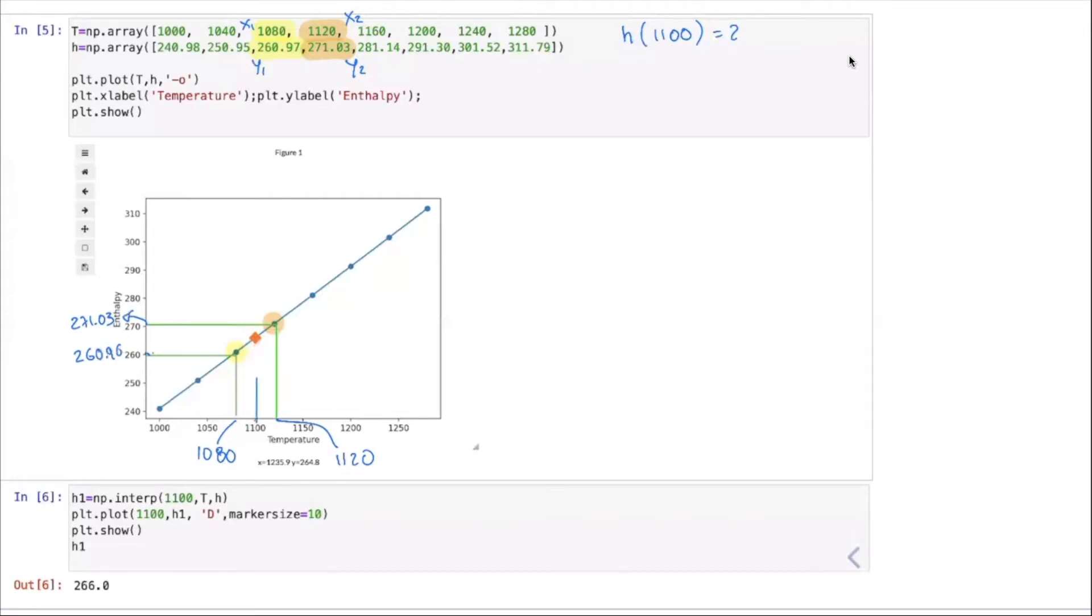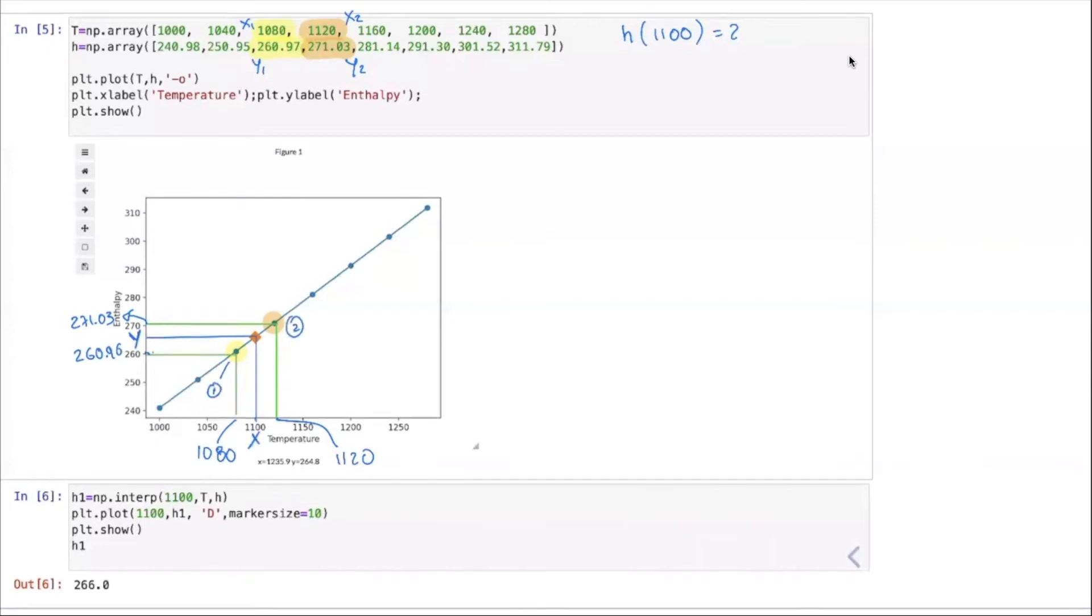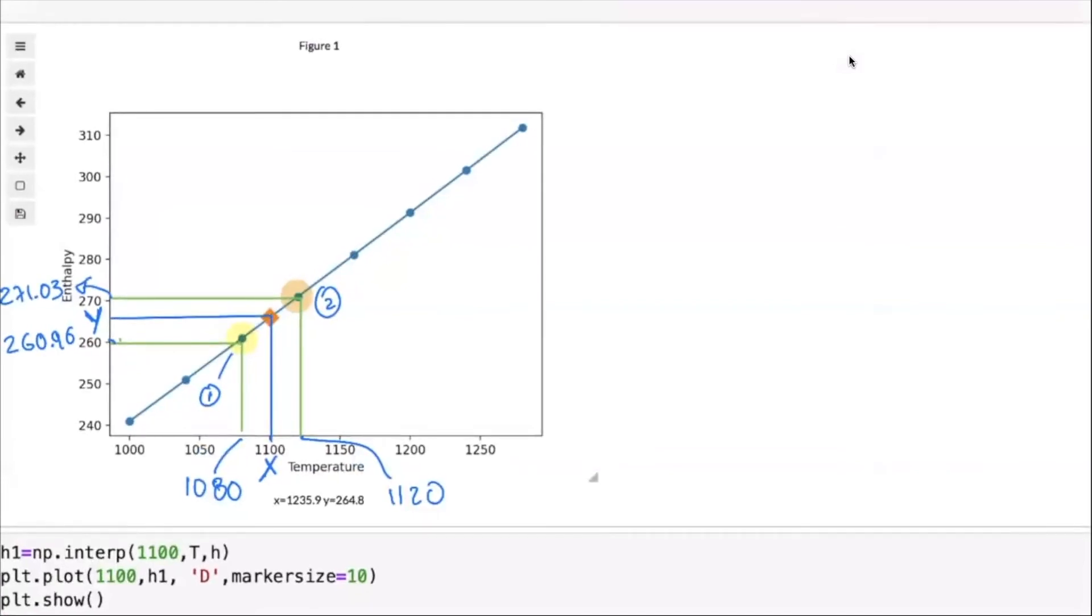What we need to find is the equation of this straight line and then evaluate the value at 1100. This is our point of interest, we want to know what is that value of the function. I'm going to call this x point and the unknown is going to be y. We know that the equation of the line is given by the slope, so the slope m is equal to (y2 minus y1) divided by (x2 minus x1).